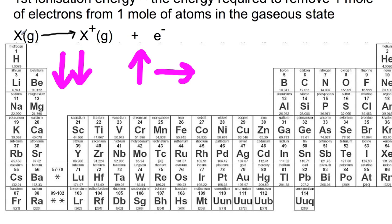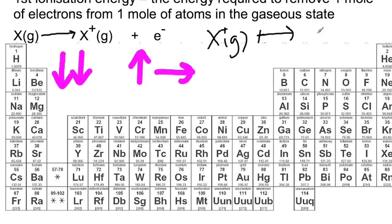The second ionization energy would be the energy required to remove an electron from something that has already had an electron removed from it, represented by: X⁺(g) → X²⁺(g) + e⁻.